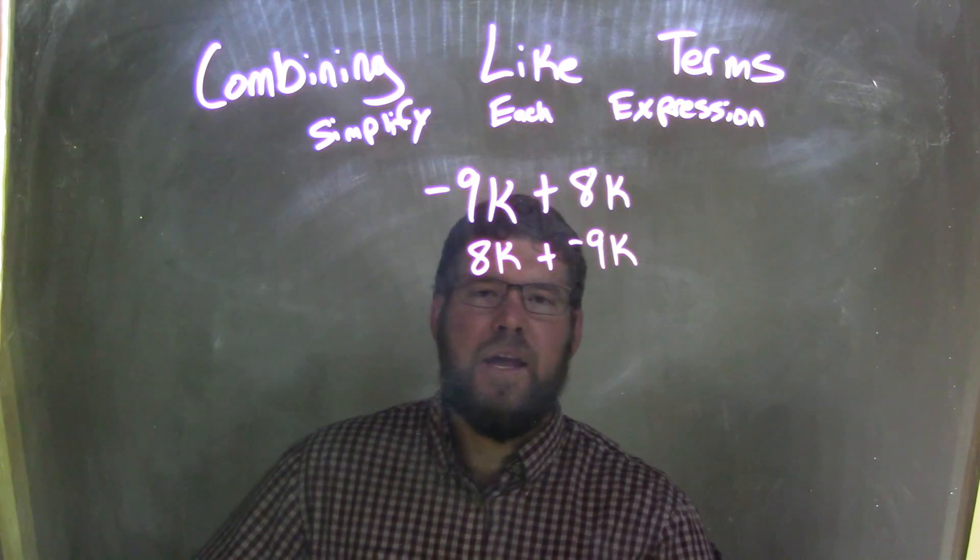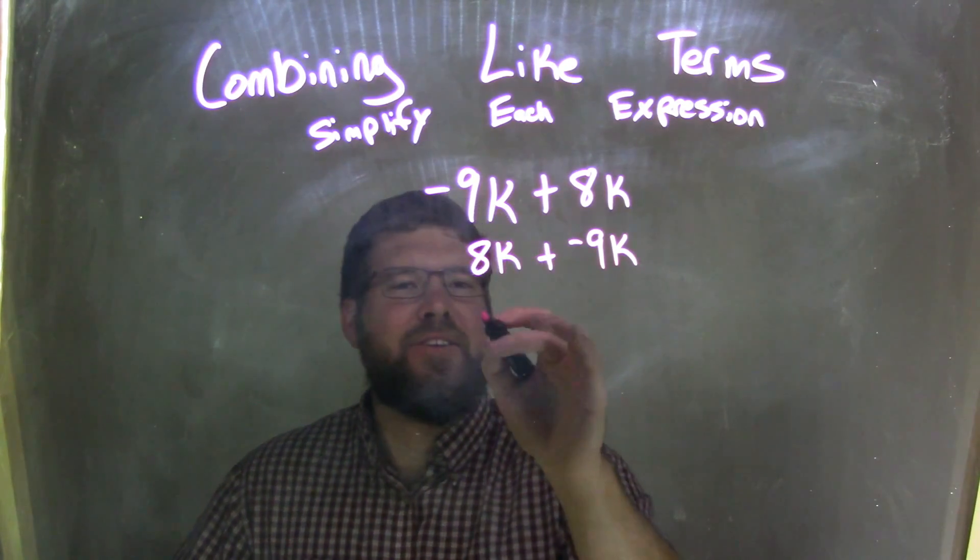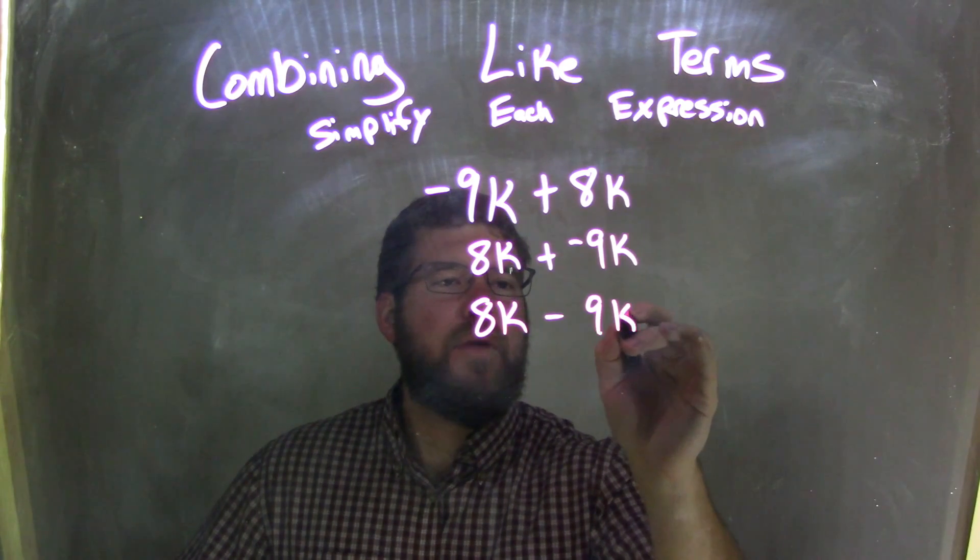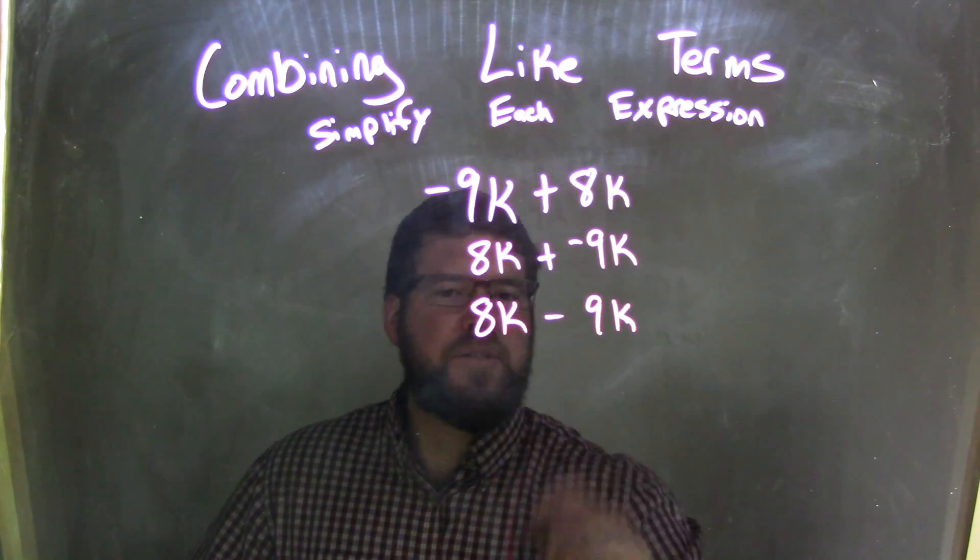Well, 8k plus a negative 9k, that's the same thing as 8k minus 9k, right? Adding a negative is the same thing as subtraction.